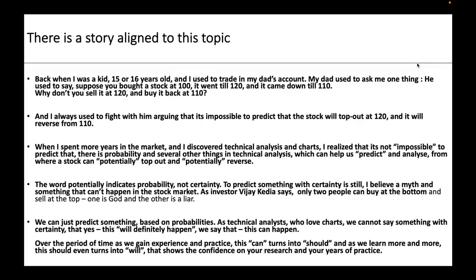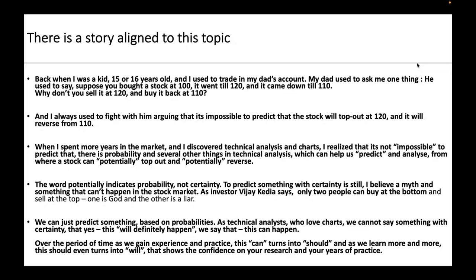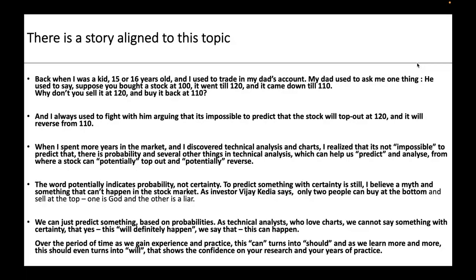As investor Vijay Kedia also says, only two people can buy at the bottom and sell at the top — one is God and the other is a liar. We can just predict something based on probabilities. As technical analysts who love charts, we cannot say something with certainty — we can say 'this can happen', not 'this will happen'. Over time, with long experience in the market, 'this should happen' can turn into 'this will happen', but that certainty only comes after years of experience.